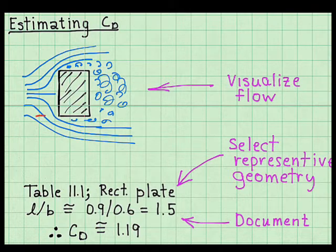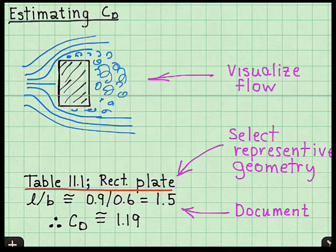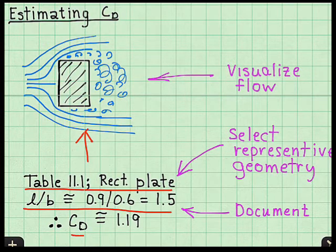In fact, the drum is sitting on the ground, and the flow at the top would look very different than the flow at the bottom. I idealize the flow as if the drum was sitting in free space. Then I look in the textbook, and I found a rectangular plate out of table 11.1. This geometry is most representative of this flow pattern. For the parameters in the table, I found a coefficient of drag of 1.19.